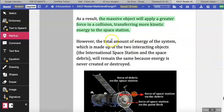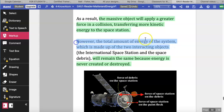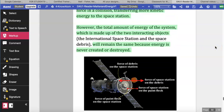However, the total amount of energy of the system, which is made up of two interacting objects, in this case the space station and the space debris, will remain the same because the energy is not created or destroyed. It just changes its form.